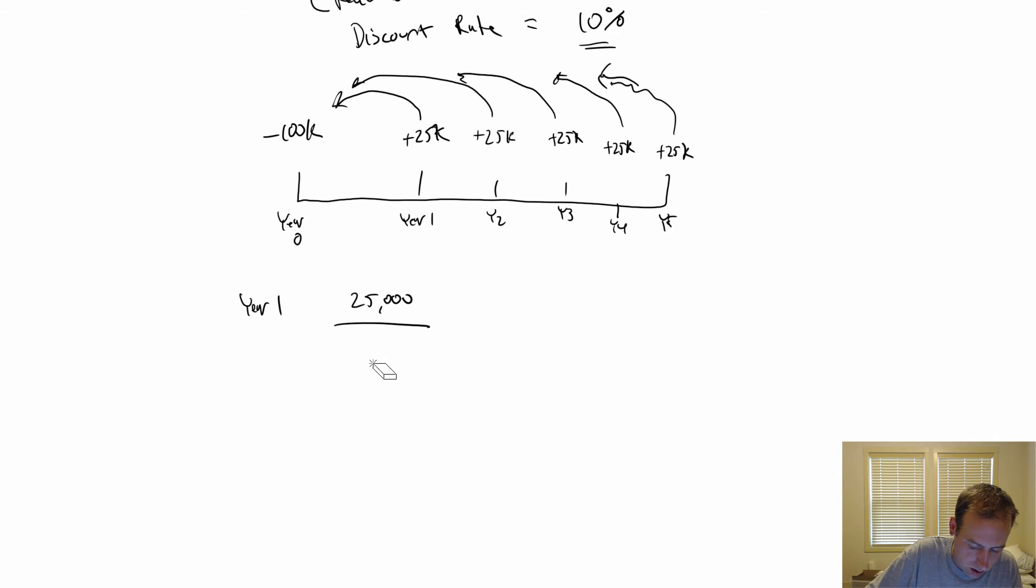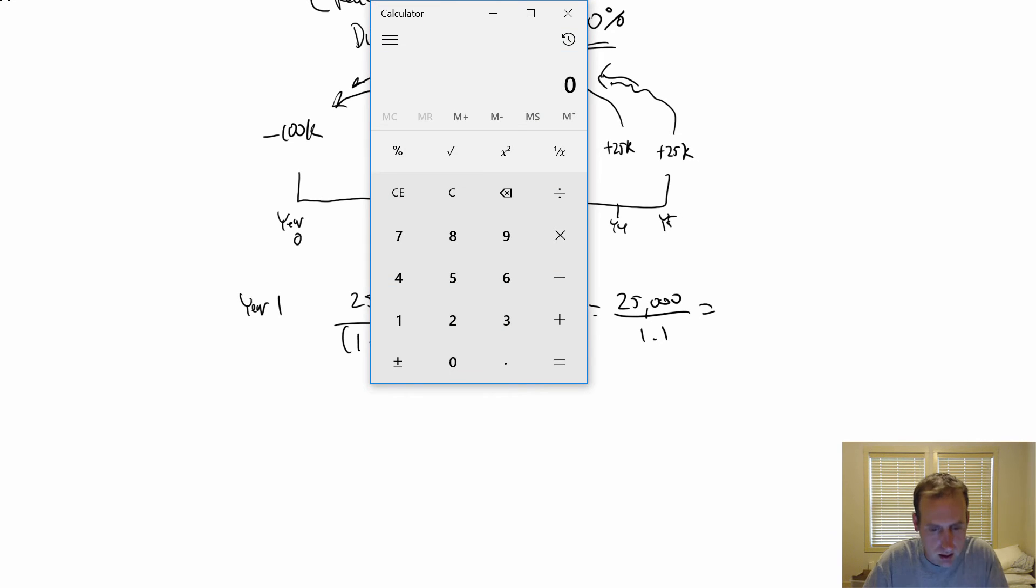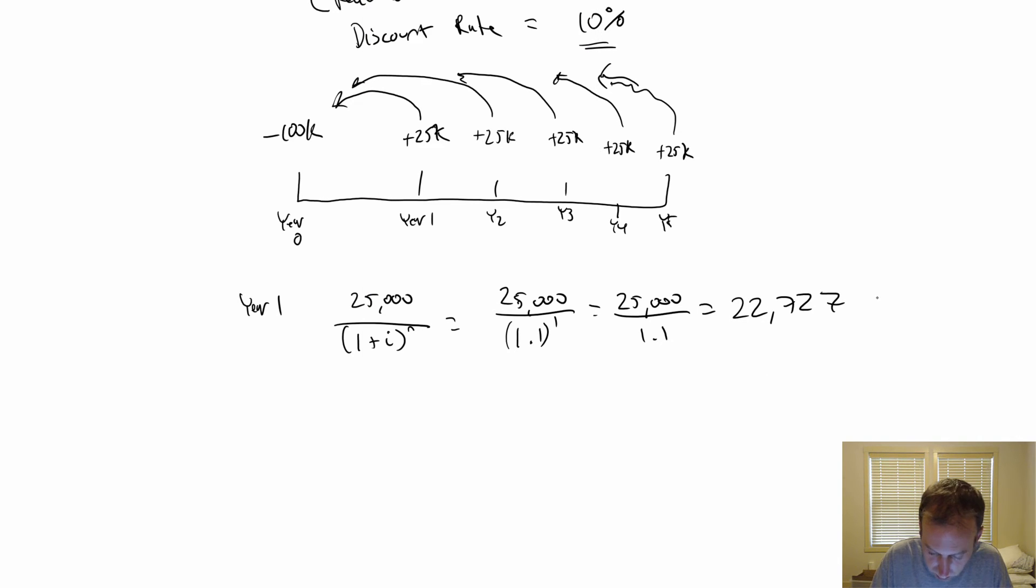You go one plus the interest rate to the power of however many years away it is. So $25,000 divided by one plus the interest rate. Our discount rate is 10%, so 1.1, and that's all raised to the power of one. It's $25,000, anything to the power of one is just its own self. $25,000 divided by 1.1. I'll pull up my calculator here. 25 divided by 1.1 is 22,727. So that's positive, that's good for me.